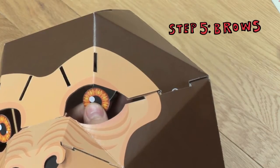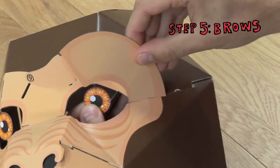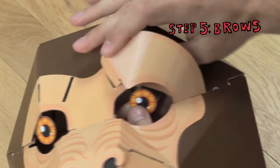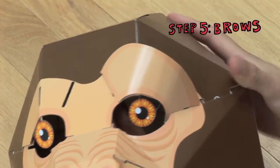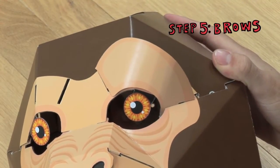Take an eyebrow piece, and slide slot 8 into the slot in the corner of the eye like this. Push tab 9 into the slot in the middle of the forehead, and pull it all the way through from the inside.